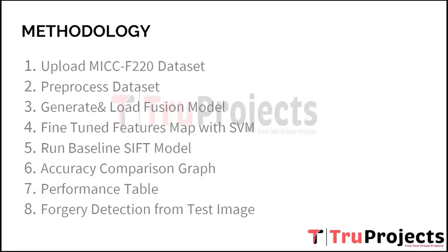The sixth step is an accuracy comparison graph, where detection accuracy of both the fusion model and the baseline SIFT model is measured and visualized. The seventh step is a performance table providing a detailed assessment of metrics such as precision, recall, F1 score, and other evaluation metrics. Finally, in the eighth step, the system is tested using test images not included in the training dataset, processing them through the trained fusion model and baseline SIFT model to provide real-world forgery detection results and verify practical applicability.